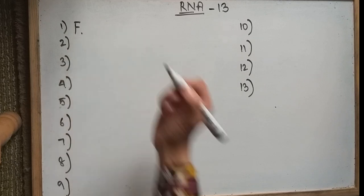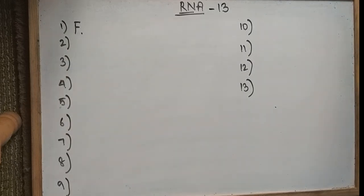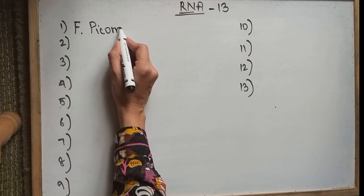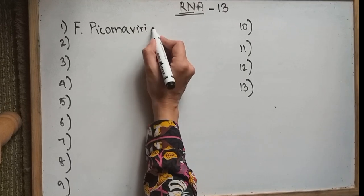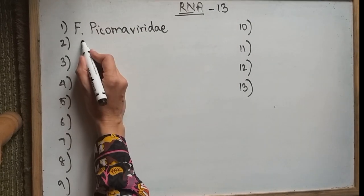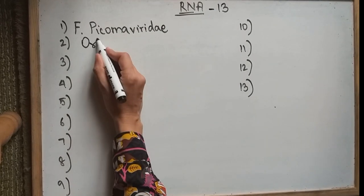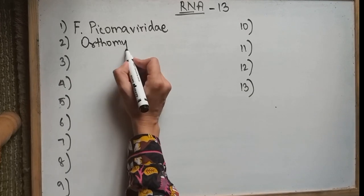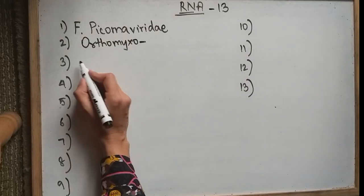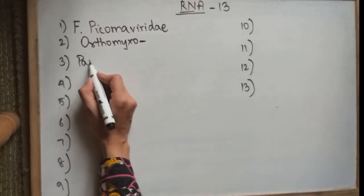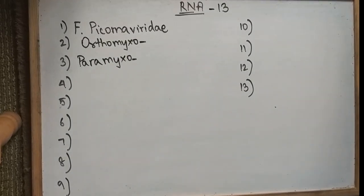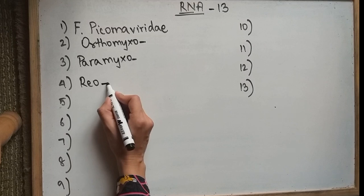So the first one is Picornaviridae — we're going to write F for family and a hyphen for Viridae. Then it's followed by Orthomyxoviridae, then we have Paramyxoviridae.